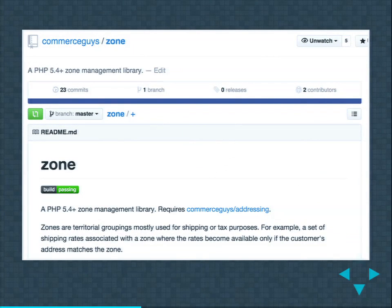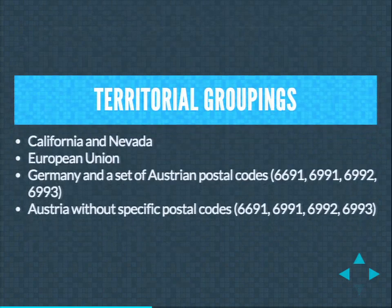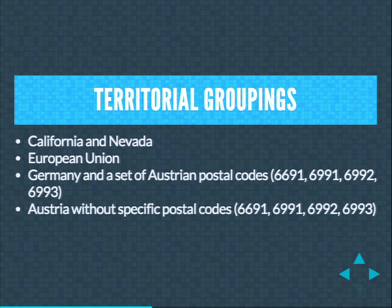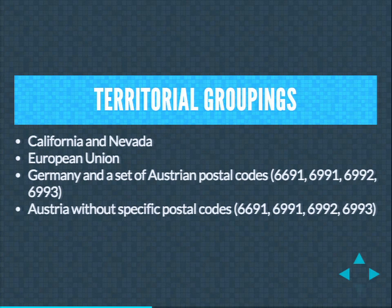Then we created the Zone library, which introduces the concept of a zone as a geographical grouping — a list of countries, a list of states, including or excluding postal codes. This is very useful for shipping or taxes. For example, you might have one shipping price for California and Nevada, and another for the European Union. It's also useful for taxes with rates targeting specific zip codes, which is common with German VAT in Europe.